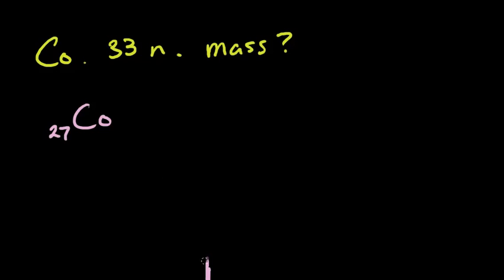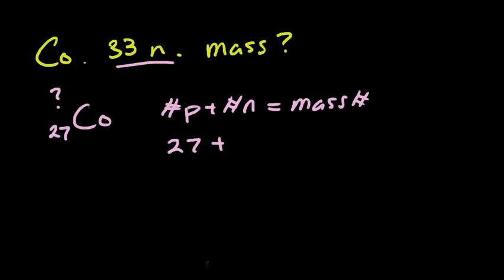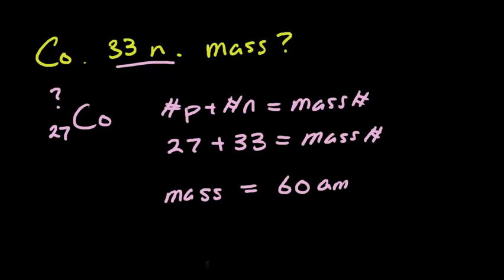And we're looking for the mass number. So we don't actually know this number on top. We're looking for that. So we just follow the same formula. We say the number of protons plus the number of neutrons will give us the mass number or the mass. So we have the number of protons, which we found, which is 27, plus the number of neutrons is given to us in the problem. So we have 33 will give us our mass number. So our mass is equal to 60 amu. This is our answer.